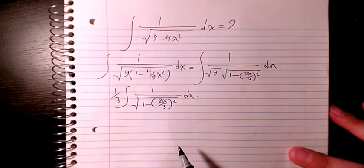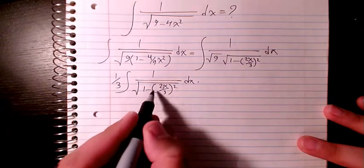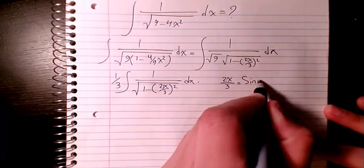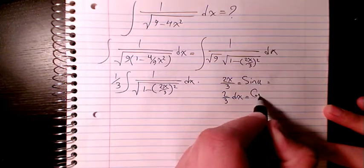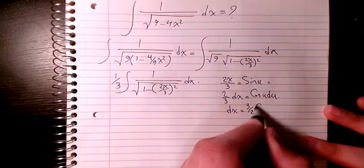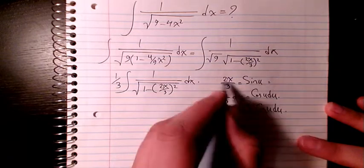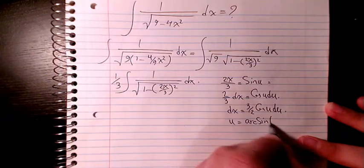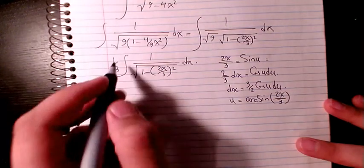Now I will have substitution. So I'm gonna have 2x divided by 3 as sine u, so 2 over 3 dx will be cosine u du, so dx will be 3 over 2 cosine u du. And I can say u is arc sine of 2x divided by 3.